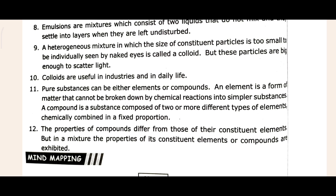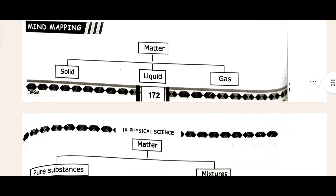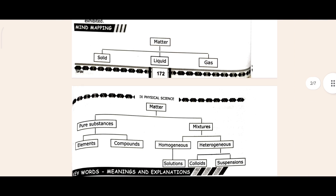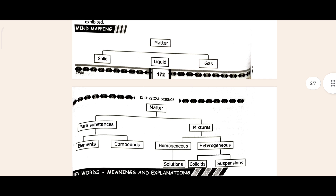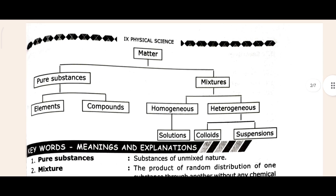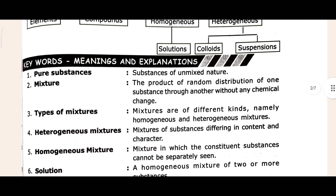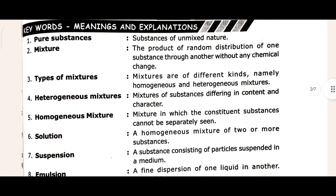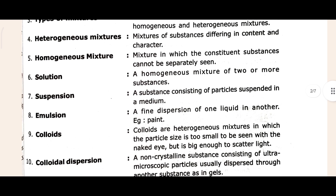If key concepts are complete, come to the mind mapping section. This is your mind mapping — lots of children write the mind map, so I'm showing it to you. If you also want to write it, you can, otherwise just leave it. After mind mapping, come to the keywords. The keywords here are: pure substance, mixture, type of mixture, and some others given here — you can easily write from here.